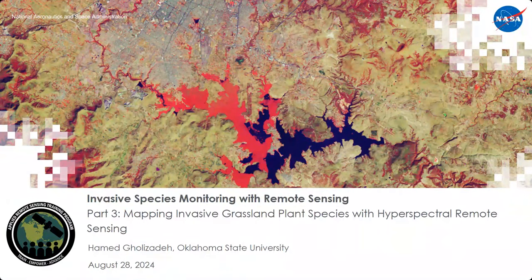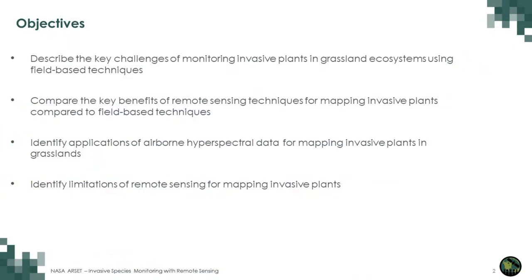Thank you very much for the introduction, Sativa. My name is Hamer Golizadeh; I am an associate professor in the Department of Geography at Oklahoma State University. Today I want to talk about the application of remote sensing to map an invasive plant in grassland ecosystems. By the end of this talk, we'll be able to describe the key challenges of monitoring invasive plants using field-based techniques, outline the benefits of remote sensing techniques, describe applications of airborne hyperspectral data, and identify limitations of remote sensing for mapping invasive plants.